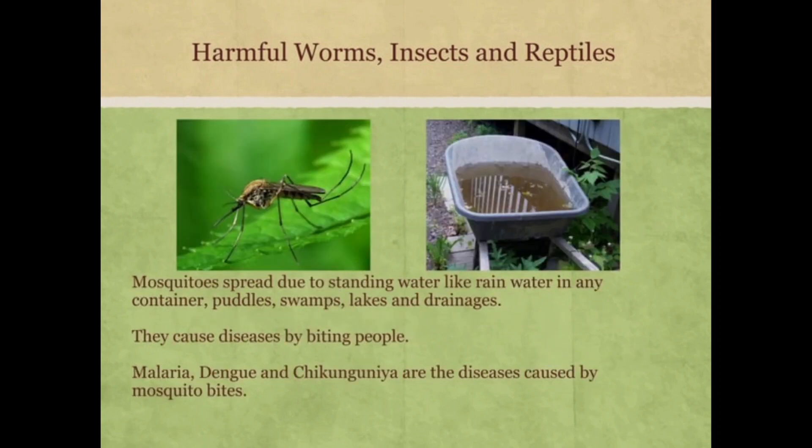Mosquitoes breed in standing water such as rain water in containers, puddles, swamps, lakes and drainage. They cause disease by biting people. Malaria, dengue and chikungunya are diseases caused by mosquito bites.